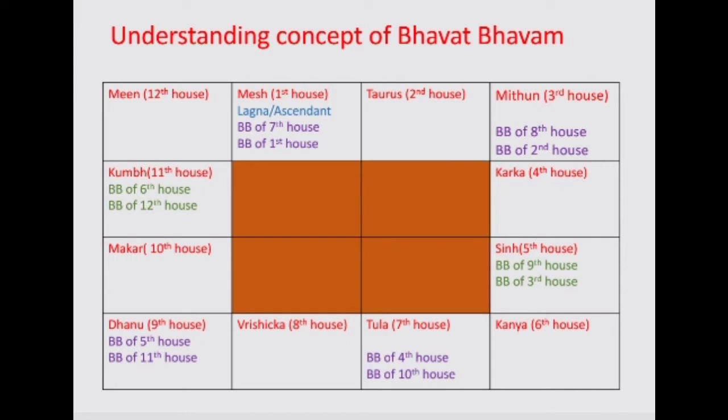Bhavat Bhavam is always calculated for a particular house in Vedic Astrology. It is like the 1st from the 1st house — that is the Bhavat Bhavam of the 1st house; the 2nd from the 2nd house — the Bhavat Bhavam of the 2nd house; the 3rd from the 3rd house — the Bhavat Bhavam of the 3rd house; and so on, up to the 12th from the 12th house.